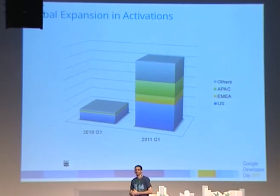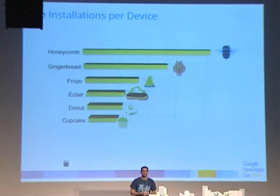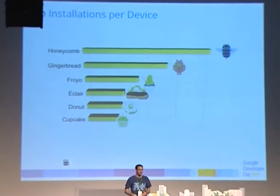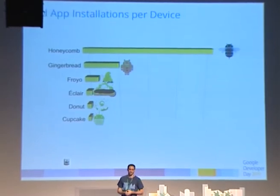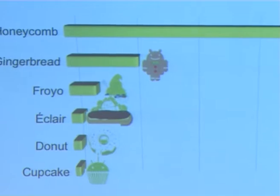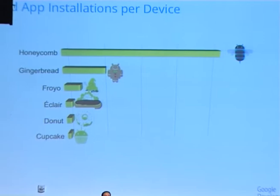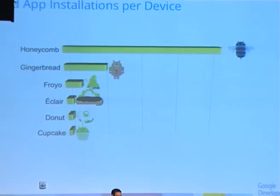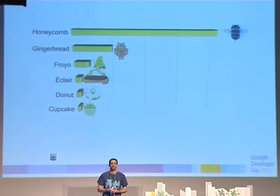The app installations per device — as the devices have been getting faster and faster, with the new markets and browsing, people are expecting more premium applications and they're installing more on those devices. There's an even bigger disparity when you look at paid applications. There was this rumor previously that people didn't pay for applications on Android. But now, with the invention of Honeycomb and now Ice Cream Sandwich, people are paying for applications and premium experiences. People are making a lot of money in the Android market.